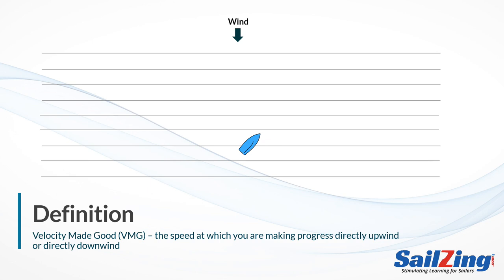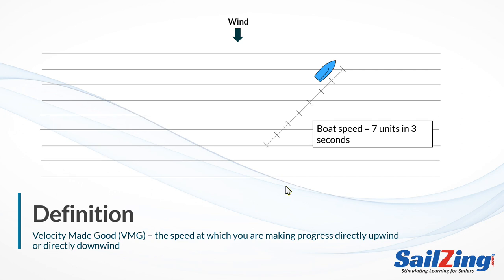Here's an example with some made up numbers. The blue boat sails upwind on a close hauled course at about 45 degrees to the wind. The boat travels 7 units of distance in 3 seconds, so we can say its boat speed was 7 units in 3 seconds. What is this boat's velocity made good or VMG? To answer this, all we have to do is see how far the boat progressed upwind. The scale shows that the boat traveled 5 units of distance upwind in 3 seconds, so the boat's VMG in this case is 5 units per 3 seconds.